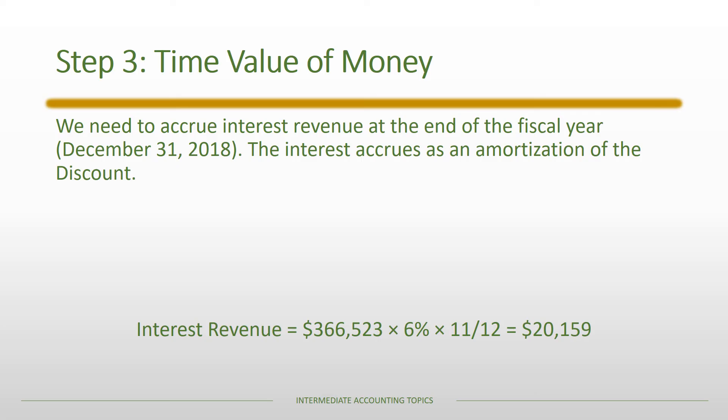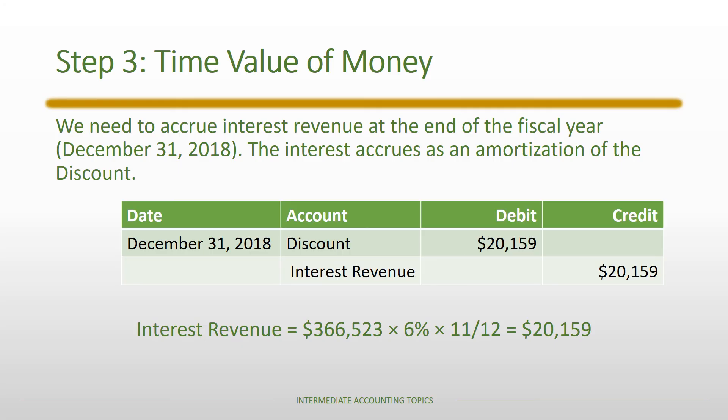Moving forward, we accrue interest revenue at the end of the fiscal year. The note was issued February 1st, so on December 31st, 2018 we accrue interest revenue because time has passed. We start with the present value — the initial carrying value of $366,523 — multiply by 6%, and accrue 11 out of 12 months, for a total of $20,159. The entry on December 31st is a debit to the discount and a credit to interest revenue, amortizing the discount as time passes.